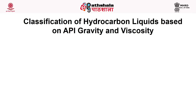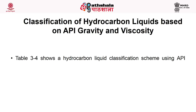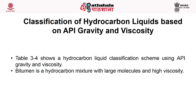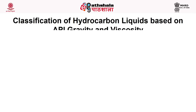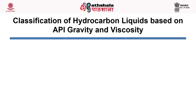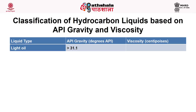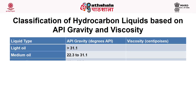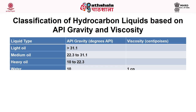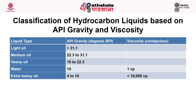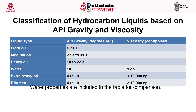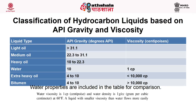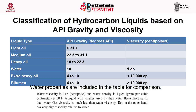The classification of hydrocarbon liquids based on API gravity and viscosity divides liquid hydrocarbons into light oil, medium oil, heavy oil, extra heavy oil and bitumen. As API gravity decreases, the oil becomes heavier. For comparison, water has a viscosity of 1 centipoise and density of 1 gram per cubic centimeter at 60°F. A liquid with smaller viscosity than water flows more easily. Gas viscosity is much less than water viscosity, while tar has very high viscosity. Extra heavy oil and bitumen have the highest viscosities.